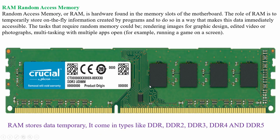RAM — random access memory — is the hardware found in the memory slots of the motherboard. The role of RAM is to temporarily store on-the-fly information created by programs in a way that makes data immediately accessible. Tasks requiring RAM include rendering images for graphic design, editing videos or photographs, and multitasking with multiple apps open. RAM comes in types: DDR, DDR2, DDR3, DDR4, and DDR5, which is the latest and fastest.